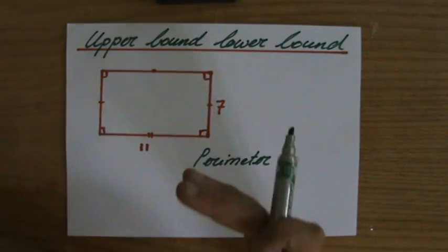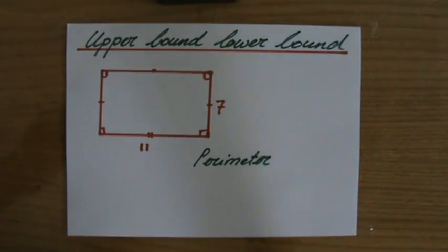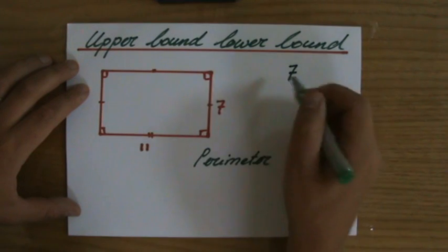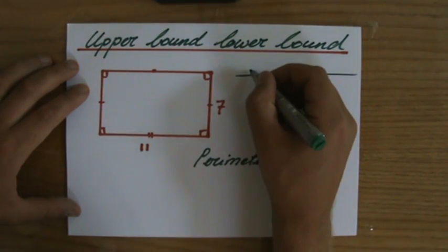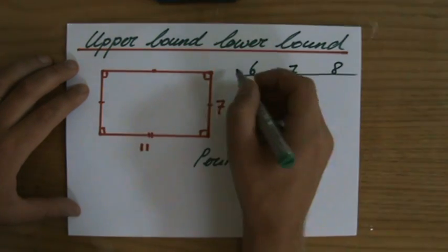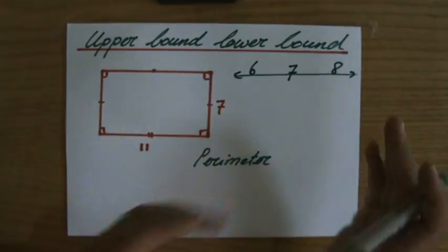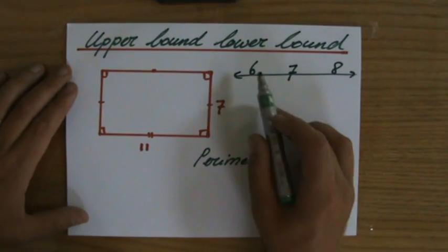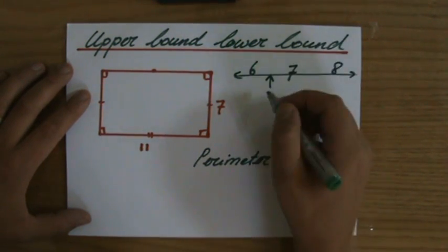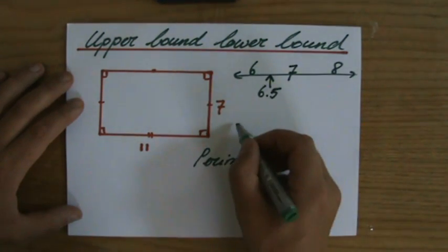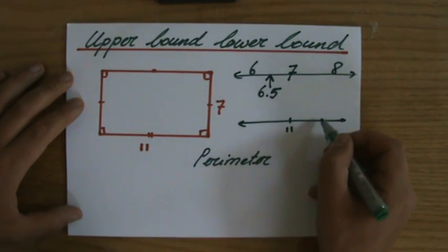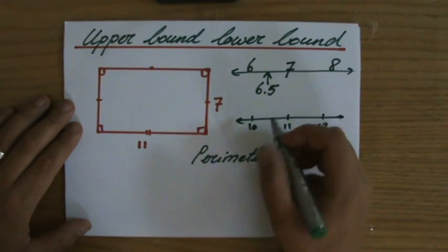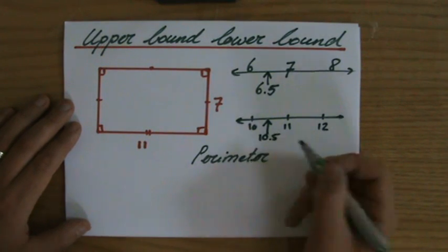Lower bound. Before I start calculating the perimeter, I have to take the lower bound values of both my lengths. I'll sketch a number line: seven is in the middle, six on one side and eight on the other. I'm looking for the lower bound — what lies exactly between six and seven? The lower bound is six point five. I do the same for eleven: ten on one side, twelve on the other, and what lies exactly between ten and eleven is ten point five.